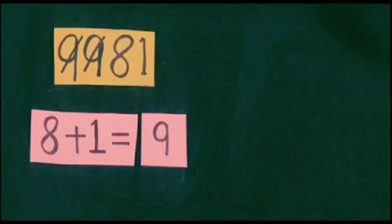In this pattern, first we omit the digit 9 from the given number. After this, we add the remaining digits. If the sum of the remaining digits is equal to 9, then the number is a multiple of 9.